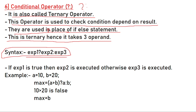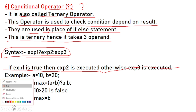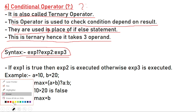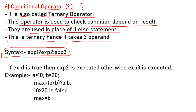If expression1 is true, then expression2 is executed; otherwise expression3 is executed. For example: a = 10, b = 20, then to find the maximum: max = a > b ? a : b. Here expression1 is 'a > b', expression2 is 'a', and expression3 is 'b'.